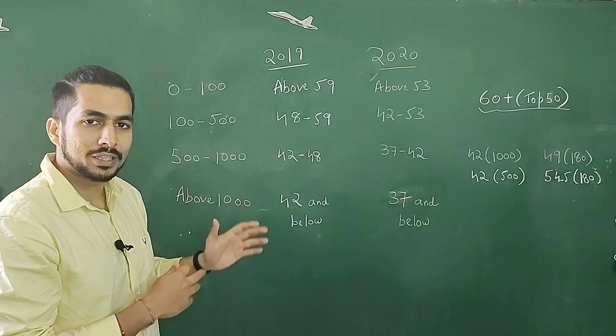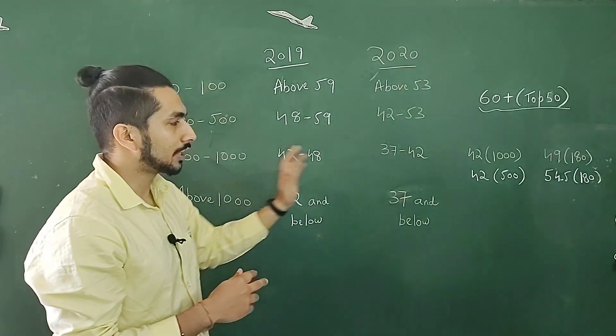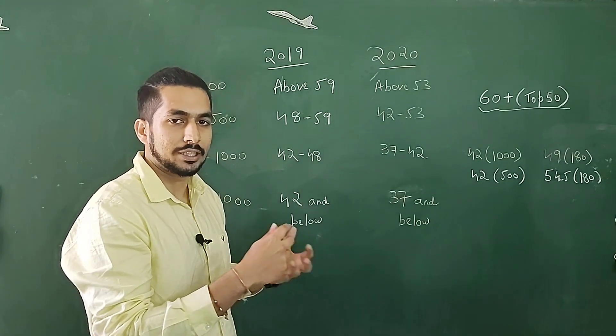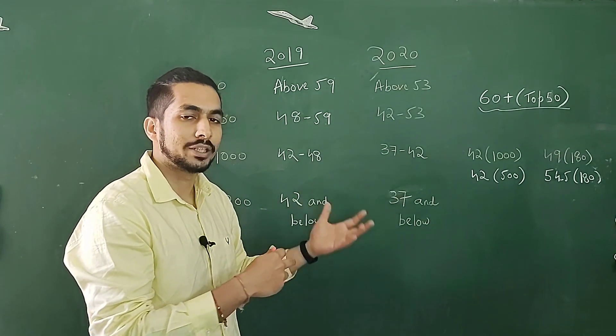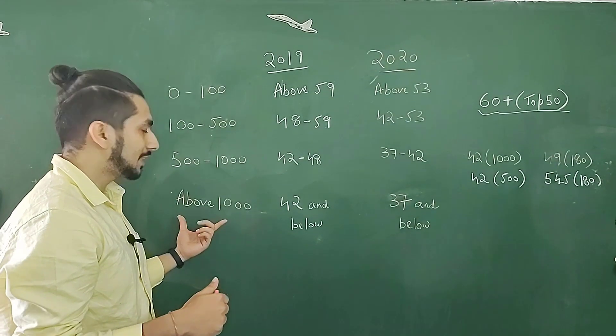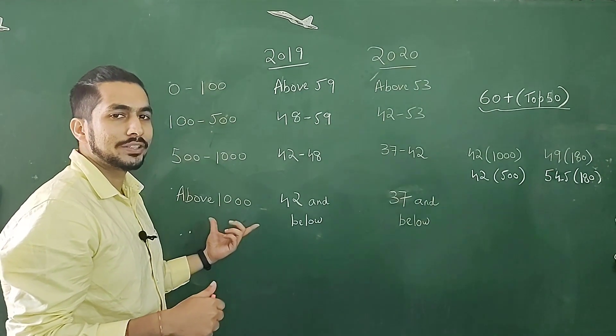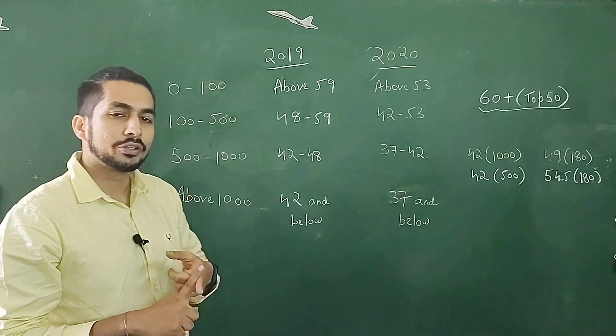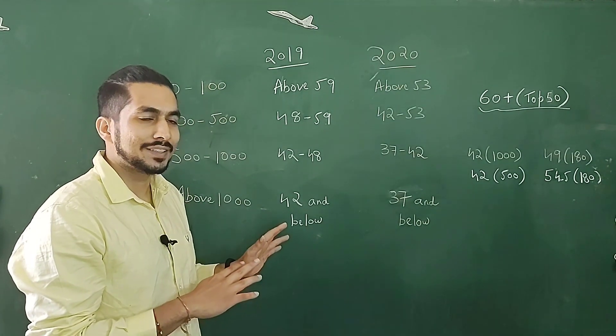So first, let's quickly talk about the category and then I'll tell you what kind of marks you would want and what kind of rank you would get with that particular target of marks. So we have the first category that is above 1000.